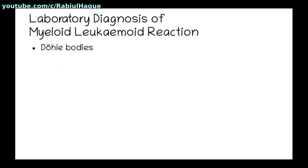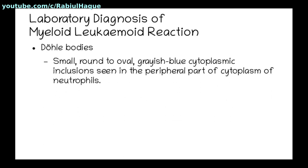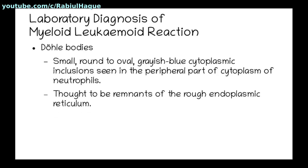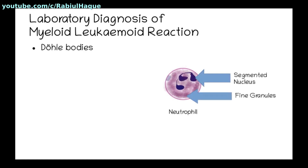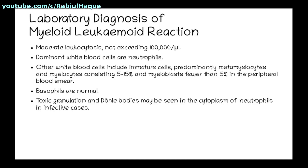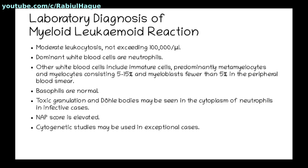Döhle bodies are small round to oval grayish-blue cytoplasmic inclusions seen in the peripheral part of the cytoplasm of neutrophils, thought to be remnants of the rough endoplasmic reticulum. This slide shows a neutrophil with a segmented nucleus and fine granules, with Döhle bodies visible on the left side near the periphery of the cytoplasm. The neutrophil alkaline phosphatase (NAP) score will be elevated in myeloid leukemoid reaction, and in exceptional cases cytogenetic studies may also be required.